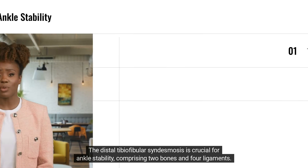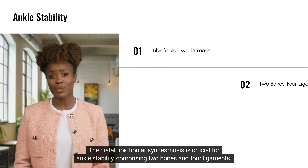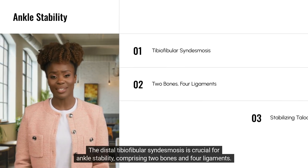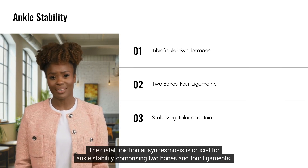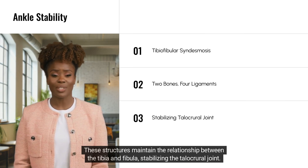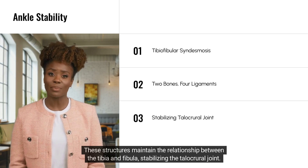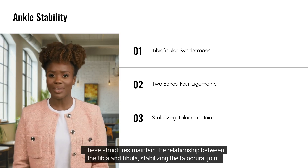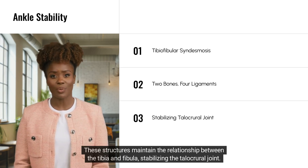The distal tibial-fibular syndesmosis is crucial for ankle stability, comprising two bones and four ligaments. These structures maintain the relationship between the tibia and fibula, stabilising the talocrural joint.